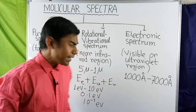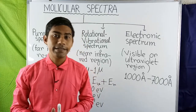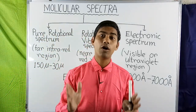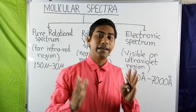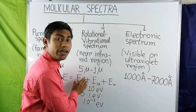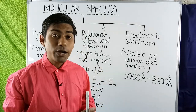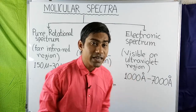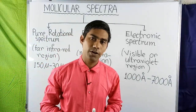Thus, each electronic energy level in reality consists of a large number of closely spaced levels. The transitions between different electronic energy levels, each of which is itself a band of a number of levels, gives rise to the molecular spectra or band spectra.